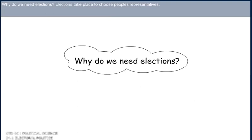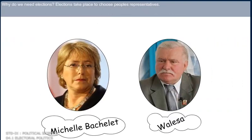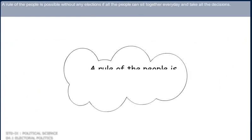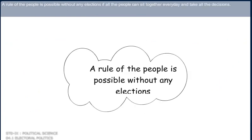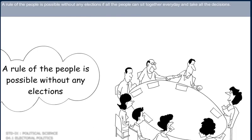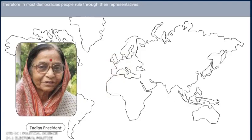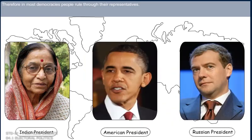Why do we need elections? Elections take place to choose people's representatives. A rule of the people would be possible without elections if all people could sit together every day and take all decisions. But this is not possible in any large community. Therefore, in many democracies, people rule through their representatives.